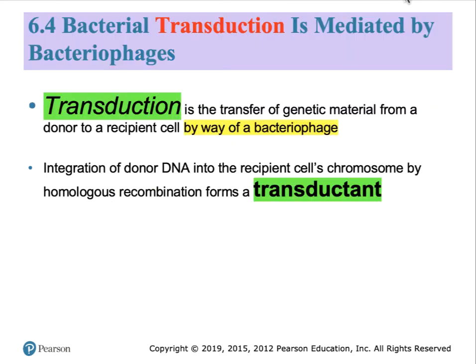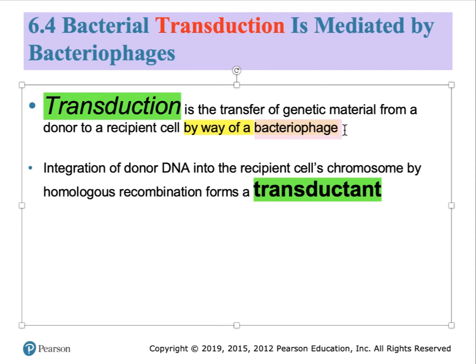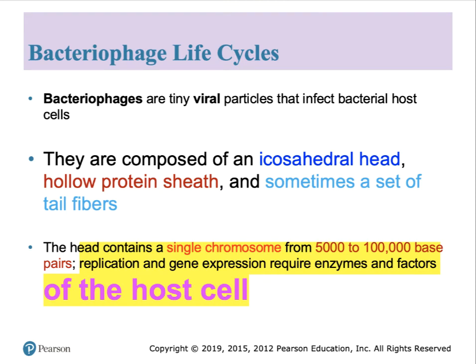The next section of the chapter deals with transduction, the third mechanism that allows bacterial cells to be changed. Transduction differs from the other two processes in that it requires the mediation of a virus. The viruses that infect bacterial cells are called bacteriophages. With transduction, a mistake is made in the transfer of information via the virus, and those mistakes are paramount in enabling geneticists to investigate the order of genes on the original bacterial chromosome. Before getting into the mapping aspect, let's look at the basic life cycles of these bacterial viruses.